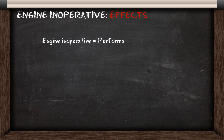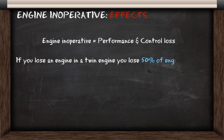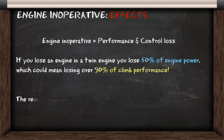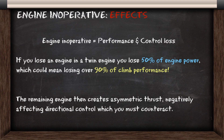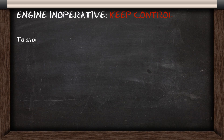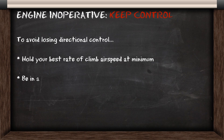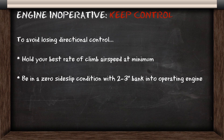The main effects of losing your engine are that you lose performance and control. If you lose an engine in a twin, you'll lose 50% of your engine power, which could mean losing over 90% of your climb performance. The remaining engine also creates asymmetric thrust which negatively affects directional control, which you need to counteract using aileron and rudder. To avoid losing directional control, you want to hold your best rate of climb speed at a minimum, and also be in a zero sideslip condition with a few degrees of bank into the operating engine.